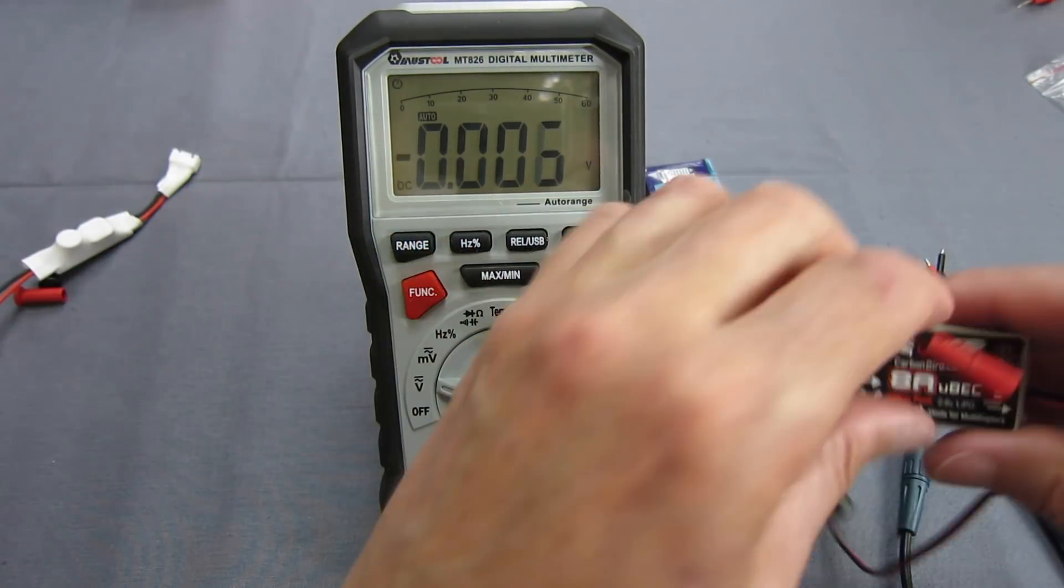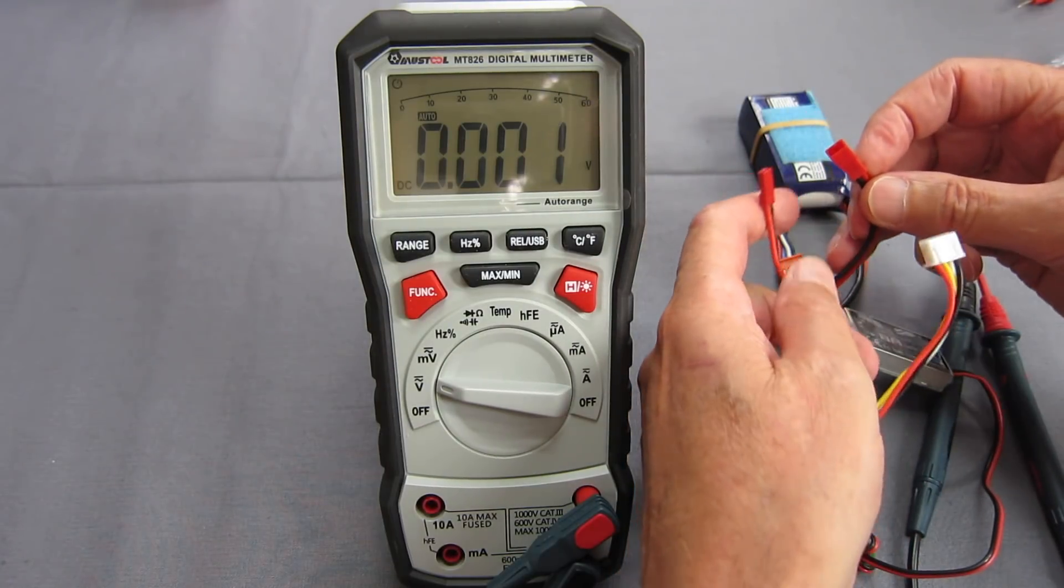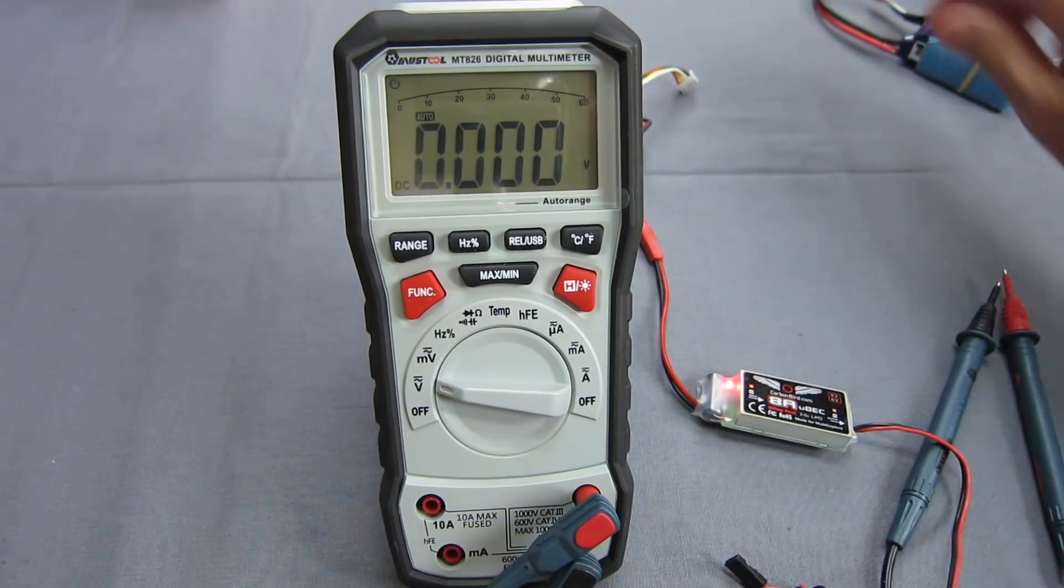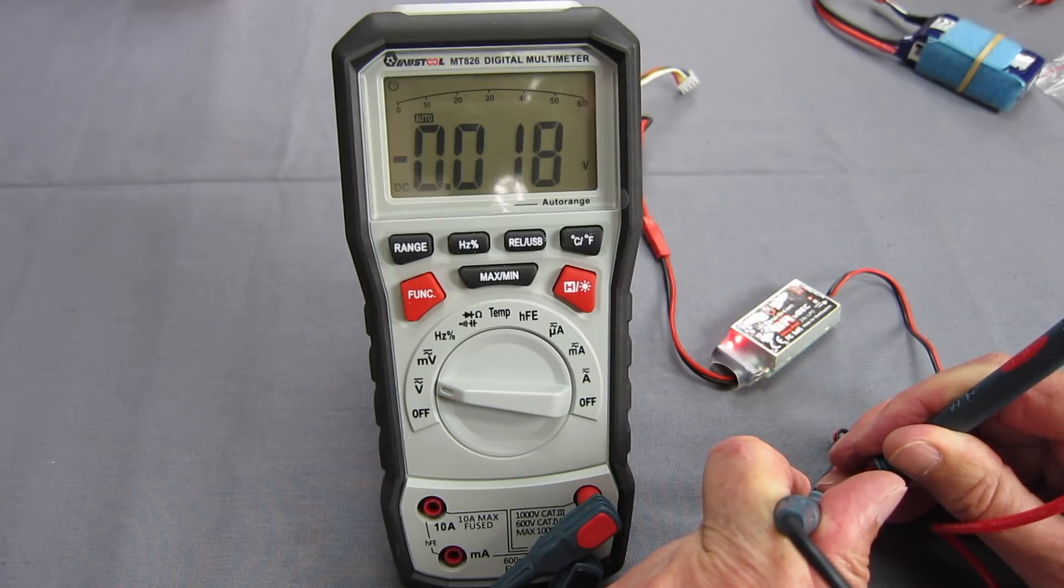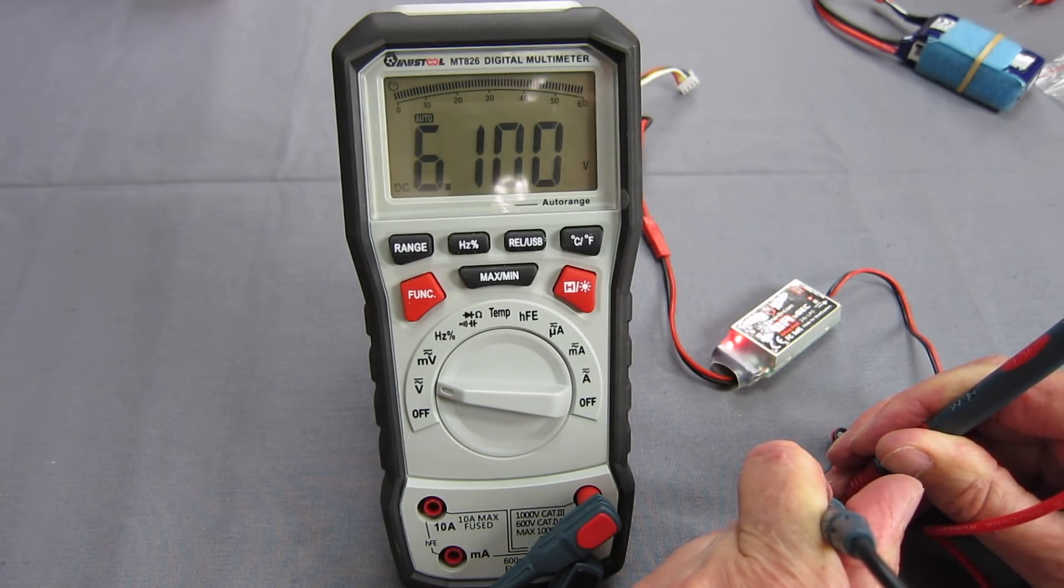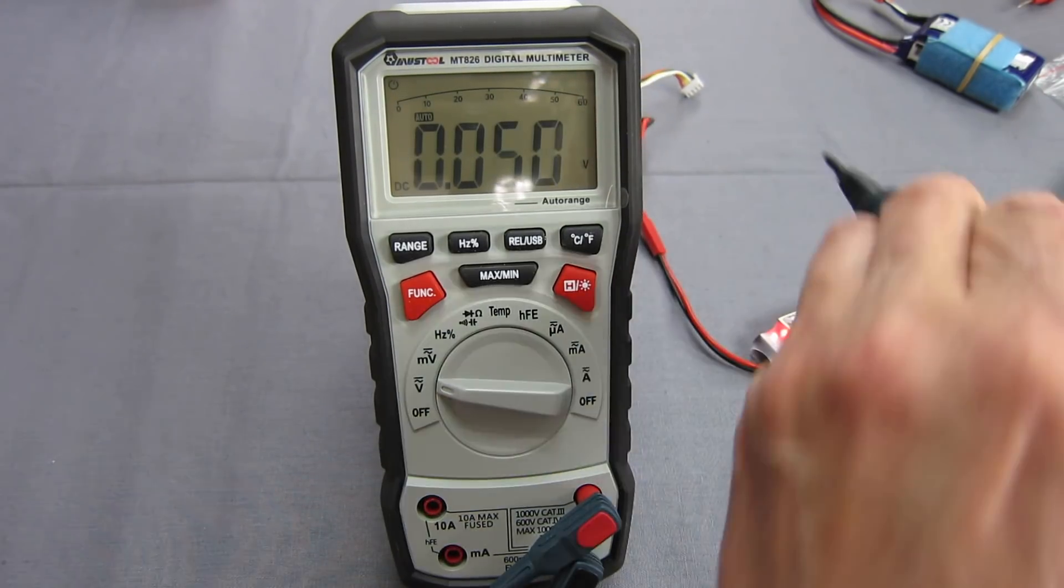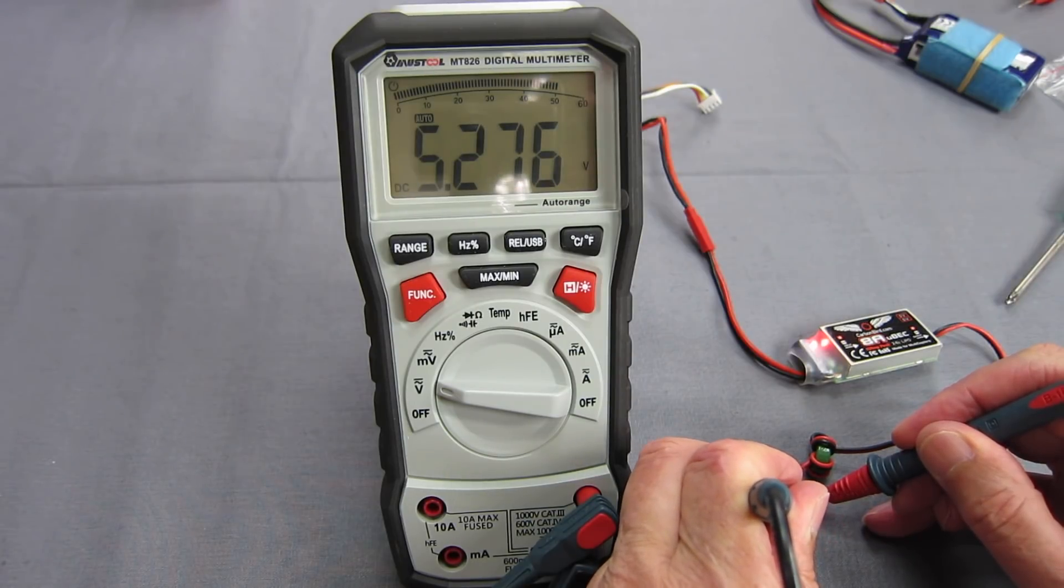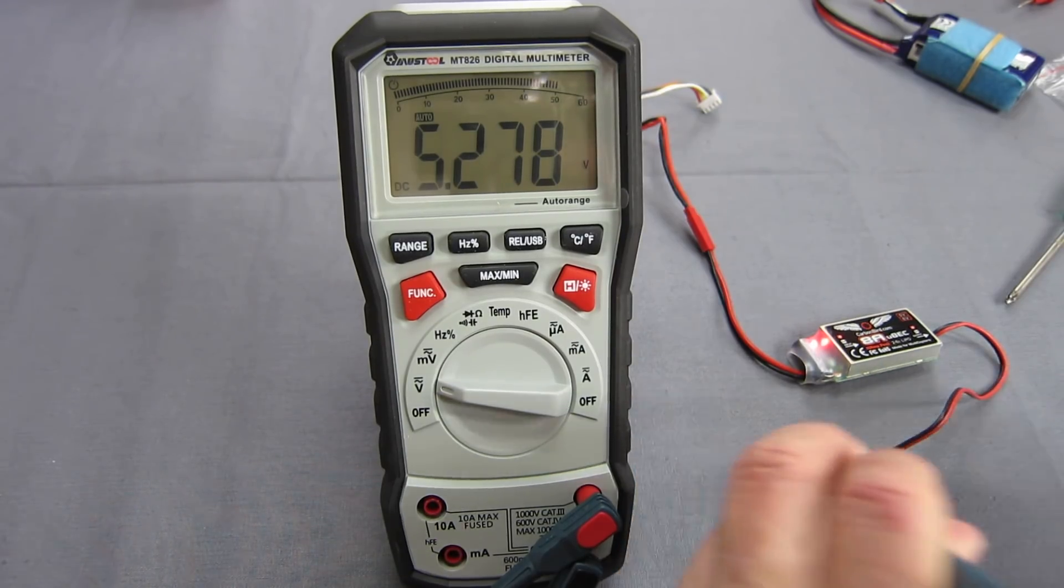Now we'll need a battery. 3S battery there. I'll plug it in. The BEC is fired up. Let's check the output. Half the battle is getting these probes in the right spot. 6.1 volts. There we go. So that's the 6 volt position. Let's change it to the 5 volt position. There we go. 5.28 volts. That's pretty close. That's good.